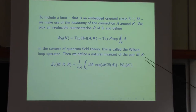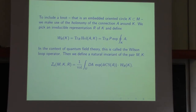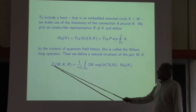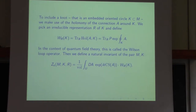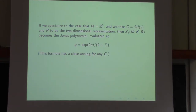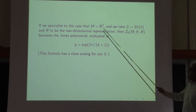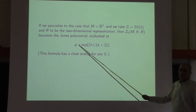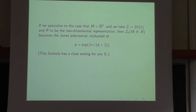Now we find an actual invariant of the pair of M and K. We integrate over the space of connections the same Chern-Simons integrand times the Wilson loop operator. This gives an invariant of a 3-manifold M with an embedded knot, depending on an integer k and a representation R. If we specialize to the case that M is R3, G is SU(2), and R is the two-dimensional representation, then our quantum invariant becomes the Jones polynomial evaluated at q = e^{2πi/(k+2)}.